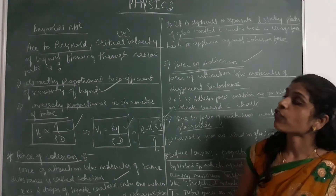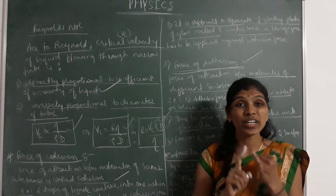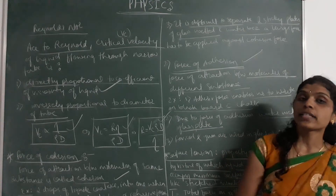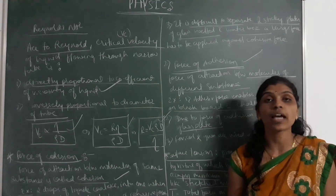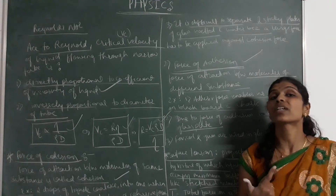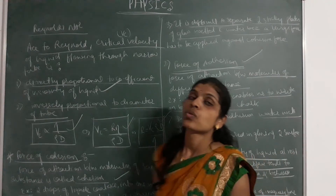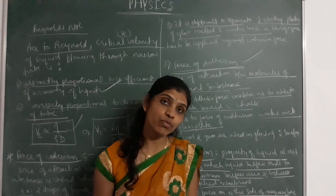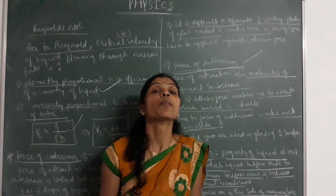To summarize, you have to remember the different formulas used to measure Reynolds number, the different kinds of forces — cohesive force and adhesive force — and examples for those. We also discussed the meaning of surface tension, the formula used to represent it, and its dimensional formula. All these concepts must be remembered, as they will be used to solve problems based on Reynolds number.